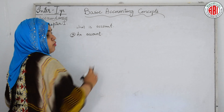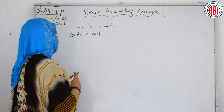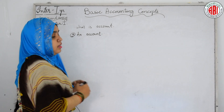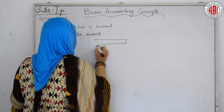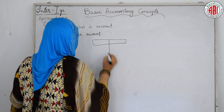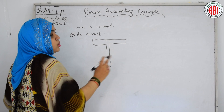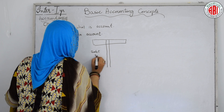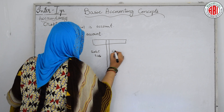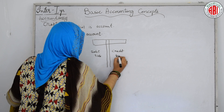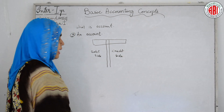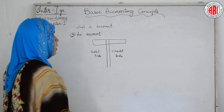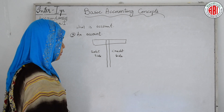Now let's deal with an account. What is an account, students? An account is a brief history of business transactions. It is normally T-shaped, so it has two sides — debit side and credit side. Always the debit side is on the left side and the credit side is on the right side.